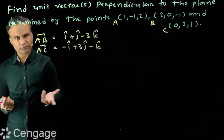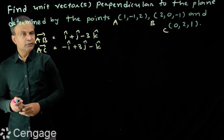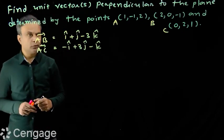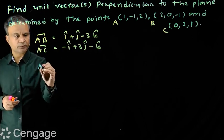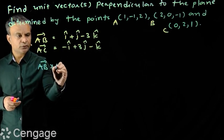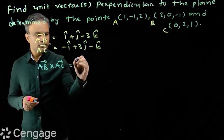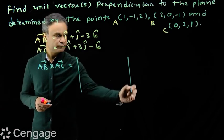Then the vector perpendicular to the plane of ABC will be AB cross AC. Now we have a formula. We use the determinant method here.